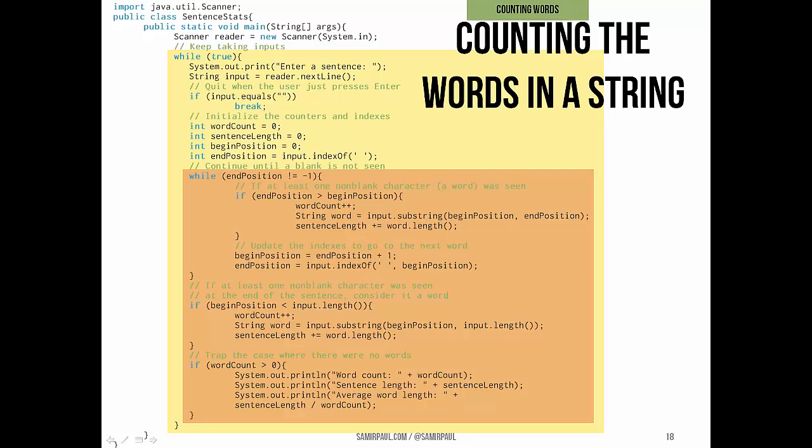Third case is this. The indexOf returns an ending position that is equal to the current beginning position. And this happens if there are any leading blanks in the sentence, or if there's more than one blank following a word. In this case, the program shouldn't count a word or attempt to extract it from the input string. It should just continue in the inner loop. This is going to have the effect of scanning over the extra blank and just ignoring it.